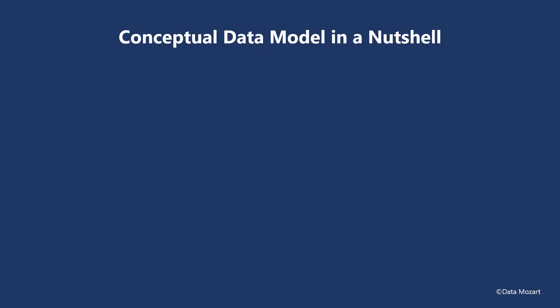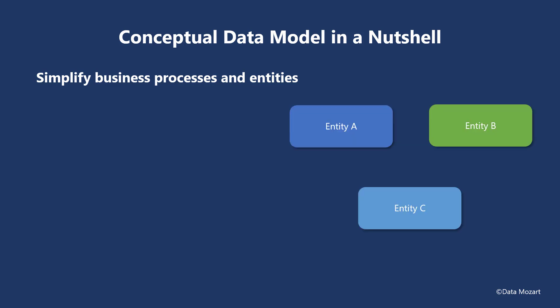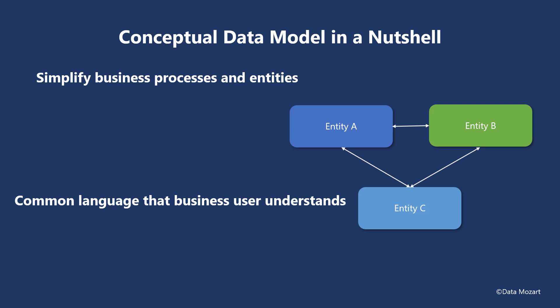Usually, the starting point is creating a conceptual data model. This is a high-level — let's say 10,000 feet high — perspective on the business needs for data. As we are talking about the high-level perspective, the main goal of the conceptual data model is to simplify business processes and entities important in day-to-day business workflow. In this stage, we are compiling a big picture: what are the key entities in our business workflow and how do they correlate with each other? The key characteristic of the conceptual data model is that it should communicate in easy-to-understand terms — leverage a common language that business users and non-technical individuals can easily understand.